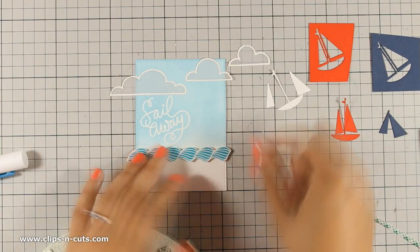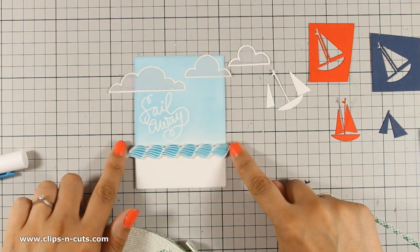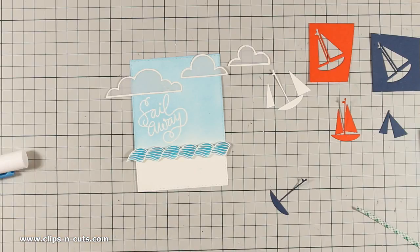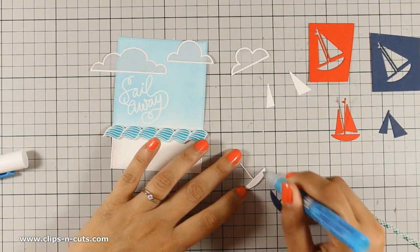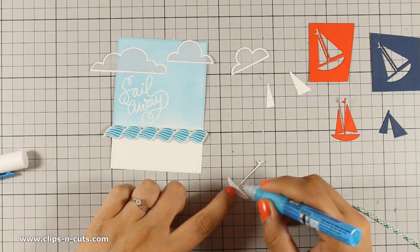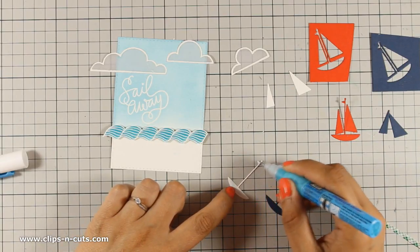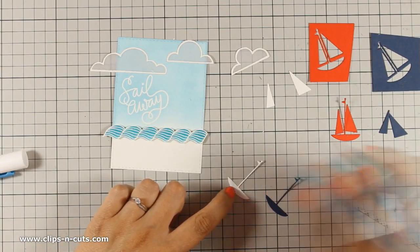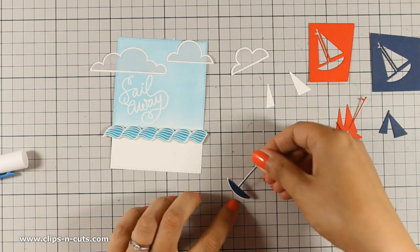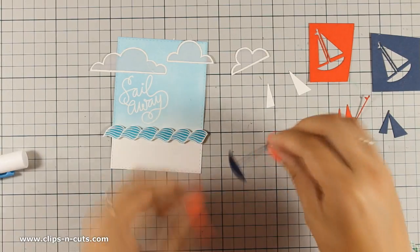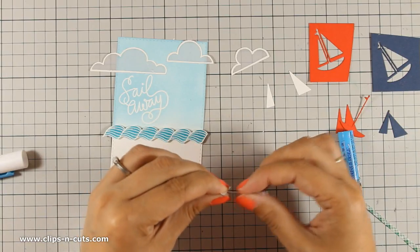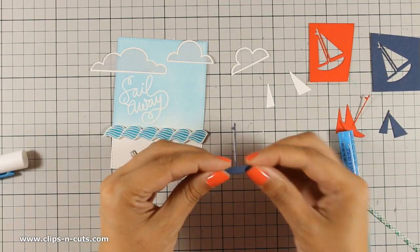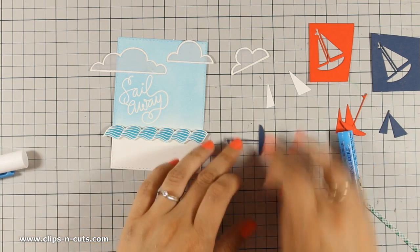I also make sure that I leave some of the waves sticking out of the panel just to make it more interesting. Now I am going to assemble my sailboat and I am going to stick all these pieces over the white sailboat and that's because I want to have an embellishment that is a little bit thicker. So you will see that I stuck one on top of the other and once my sailboat is ready I am going to use again my glue pen and stick it just behind my waves.